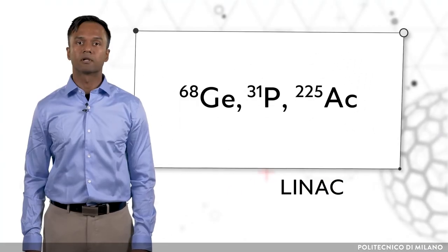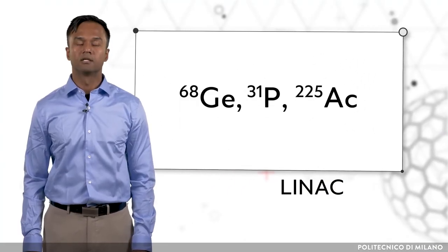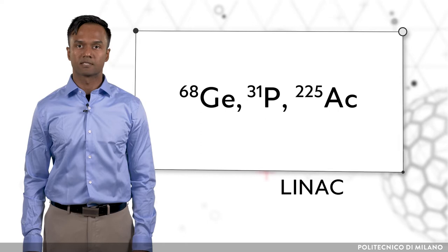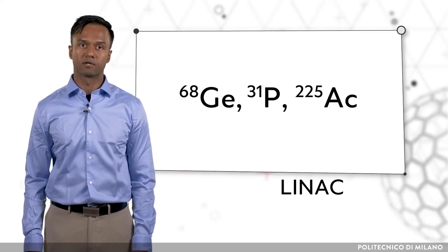Other important isotopes produced using LINAC are germanium-68, phosphorus-31, and actinium-235.